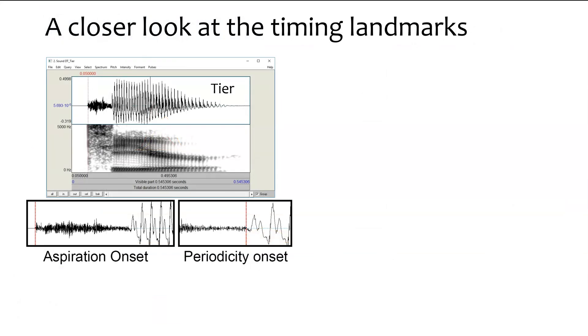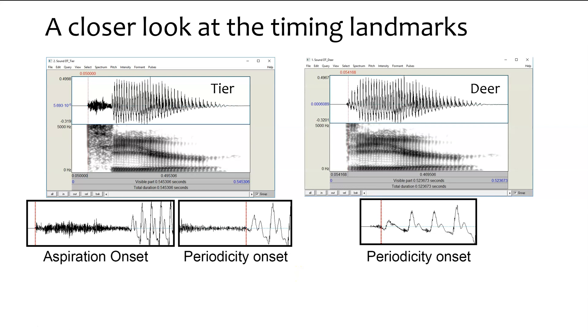So let's take a closer look at some of those timing landmarks to know where those data came from. Up top we have the word tier, and in these boxes down here we've zoomed in to the region right around that period of aspiration. We can see the aspiration onset, or the burst onset, is marked with that red vertical line, and then over here the onset of periodicity is marked with another line. For its cognate pair, deer, what we're doing is just marking the onset of periodicity. And then that little blip that comes before it is what we call the burst.